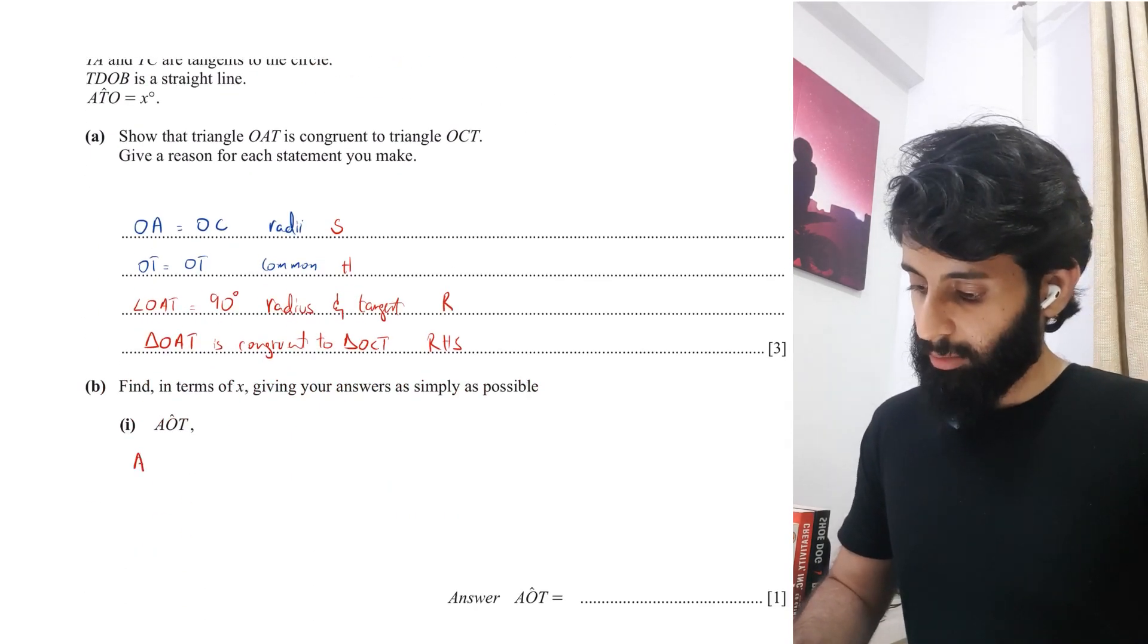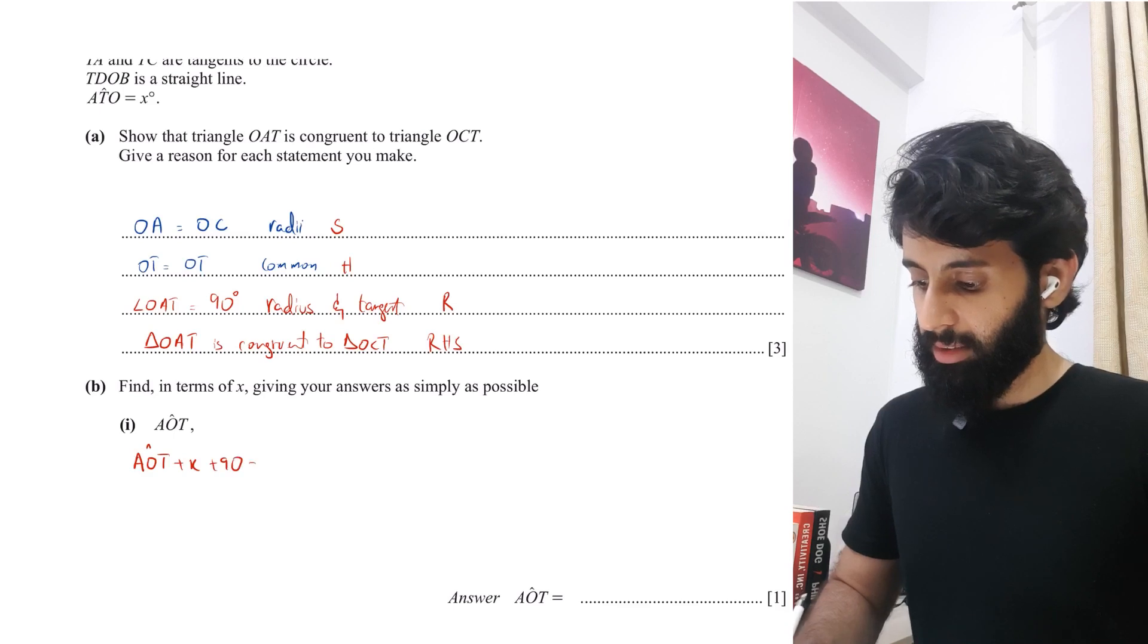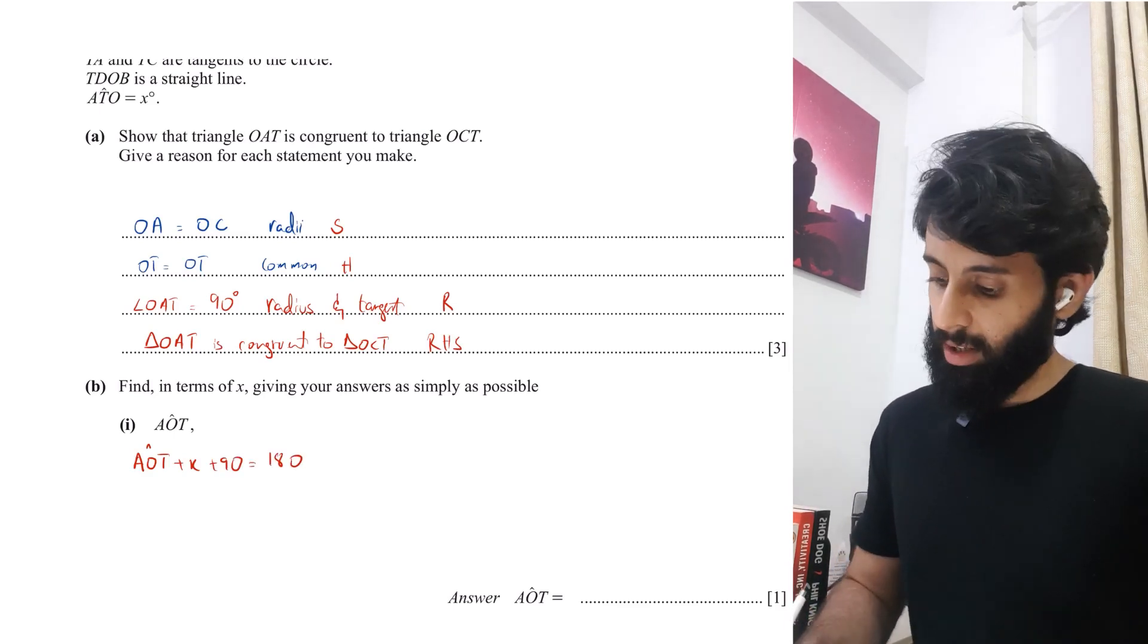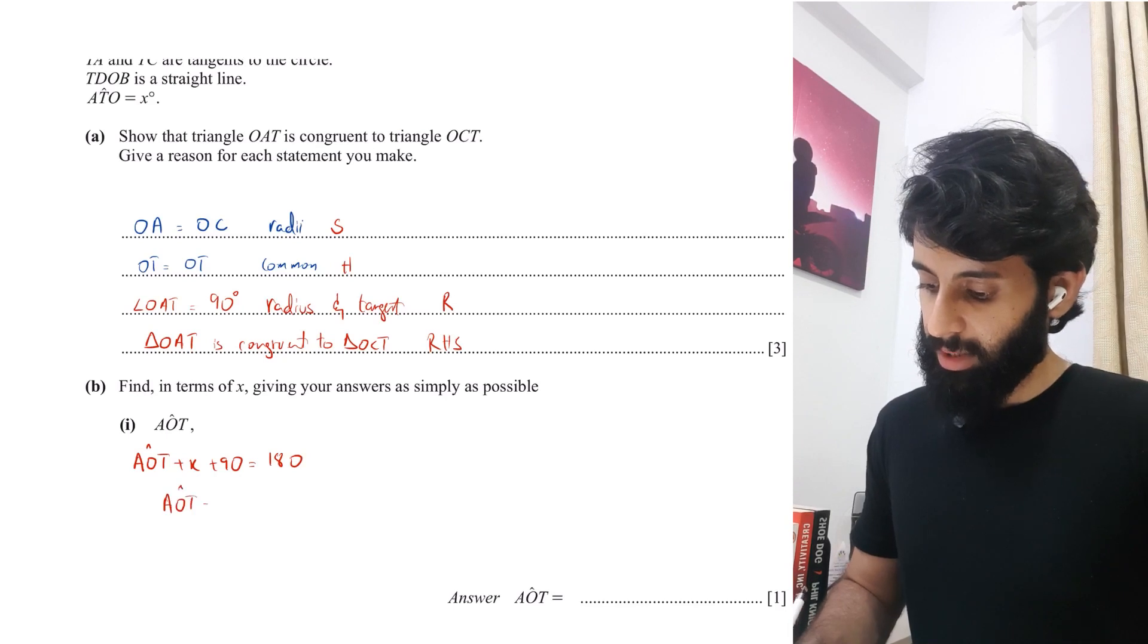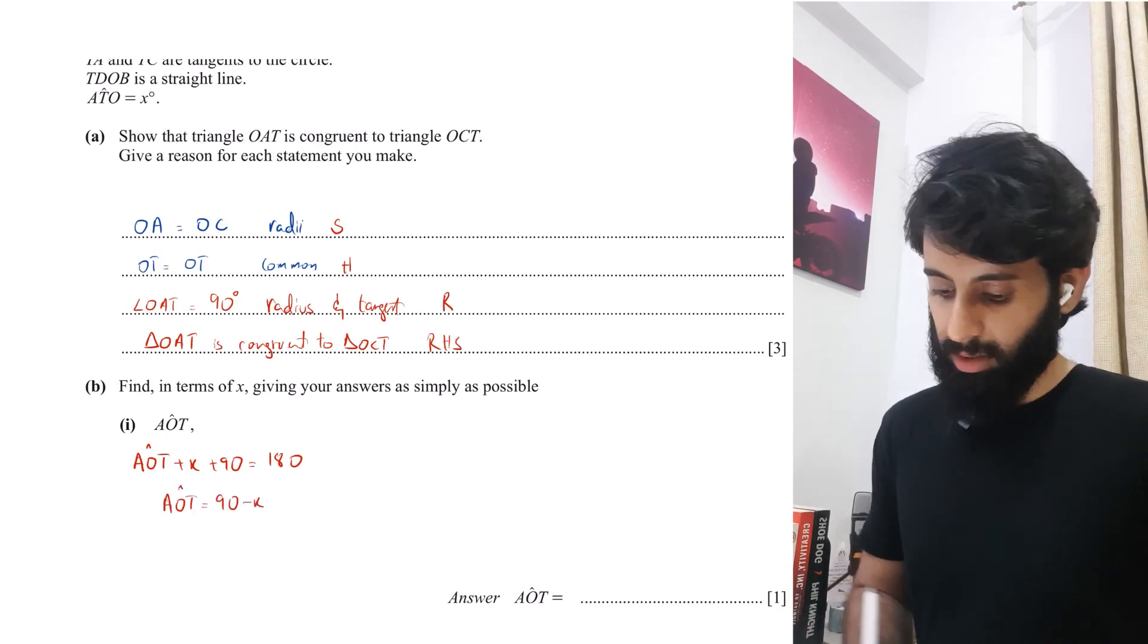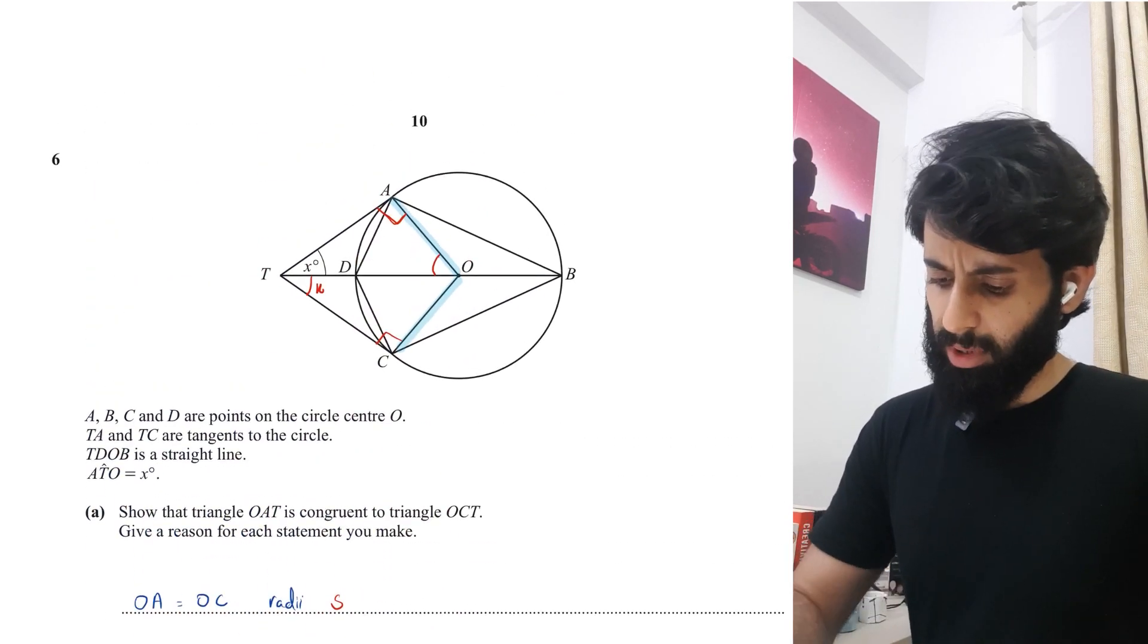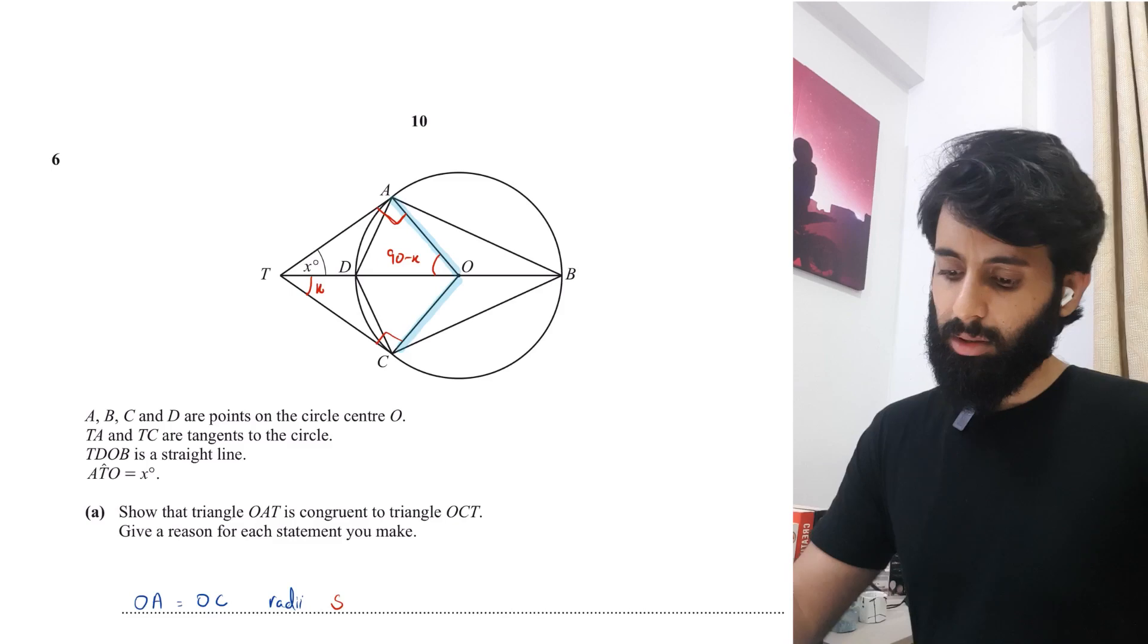If the angle given to us ATO is X, that means this angle right here will also be X because we just saw that the two triangles are congruent. The angle we have to find is AOT. The working here would be that AOT plus X plus 90 are the three angles in a triangle. So if I make AOT the subject, that's going to be 90 minus X.